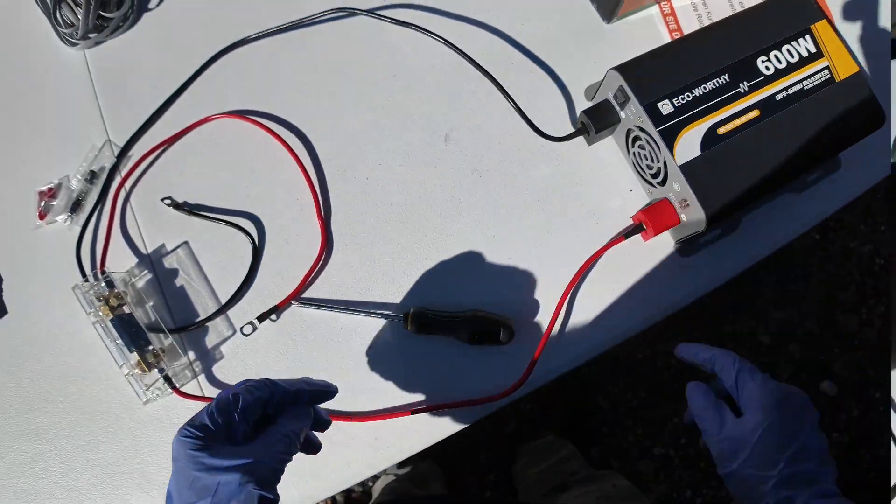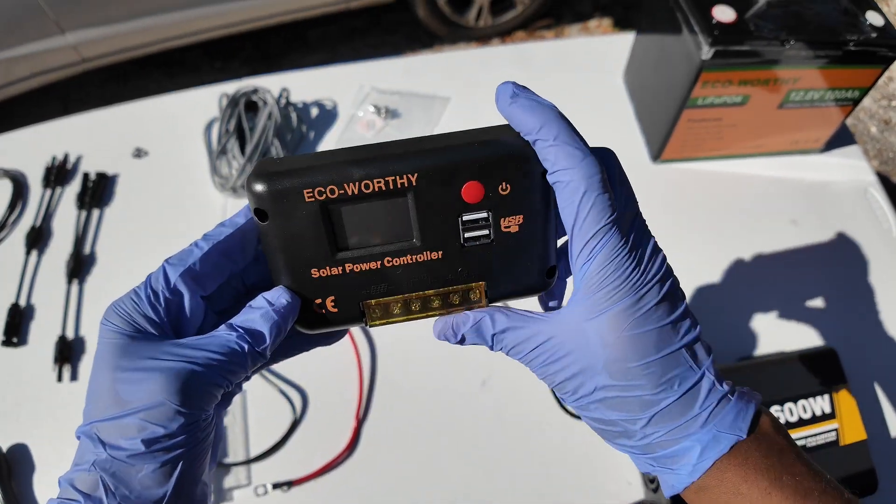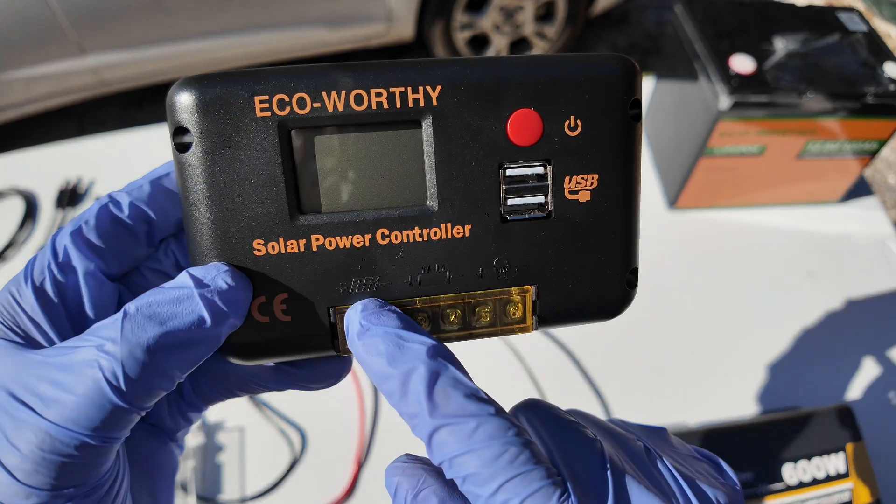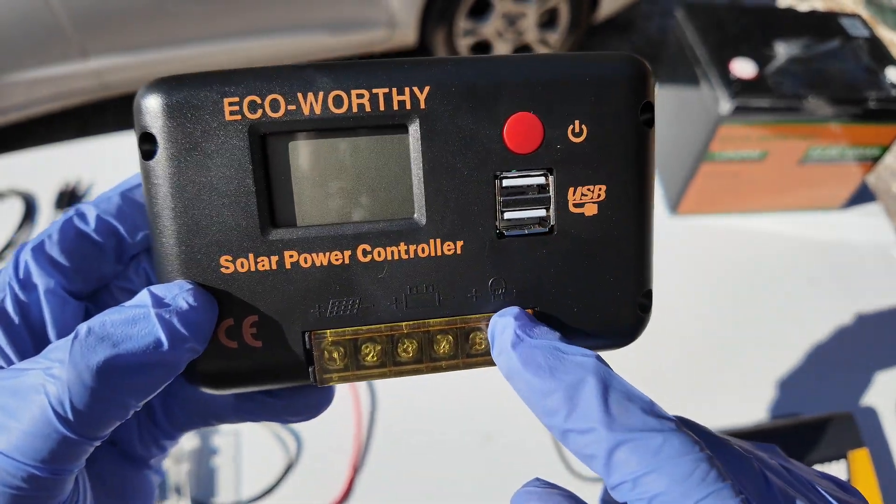Next up in the process, we are going to start connecting our battery cables to the power controller. Do note there is a slot for the solar panels, the battery, and an optional DC load.